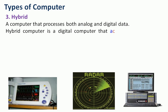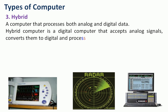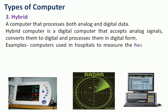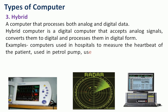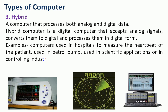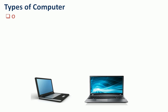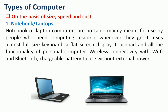A hybrid computer is a digital computer that accepts analog signals, converts them to digital, and processes them in digital form. For example: computers used in hospitals to measure the heartbeat of a patient, computers used in scientific applications, controlling industrial processes, defense radar systems.